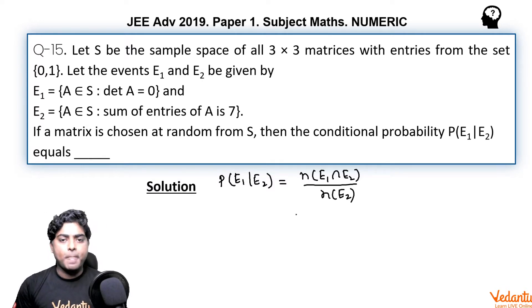So first look at E2. How can you find number of such matrices in the set S, sum of all the 9 elements, sum of all the entries is 7. So as there are total 9 elements in the matrix and the elements can either be 0 or 1, in order to get sum 7, definitely we should have 7 ones and 2 zeros.